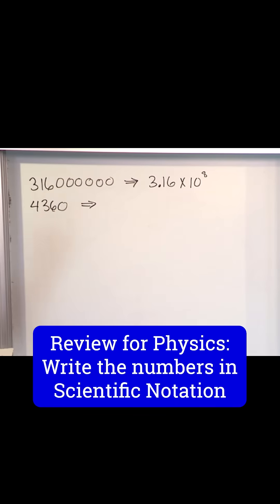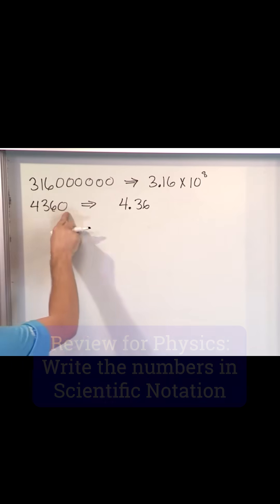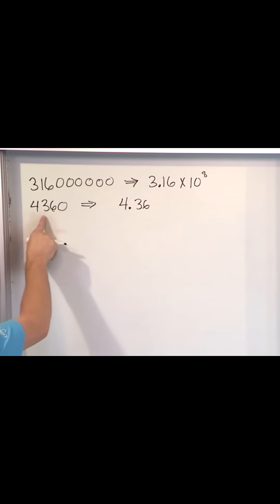What if I wanted to write that in scientific notation? Well, I just write the first digit down, put a decimal, and then write the other digits, three, six. I don't even need to write this zero here. All I need is the first non-zero numbers.